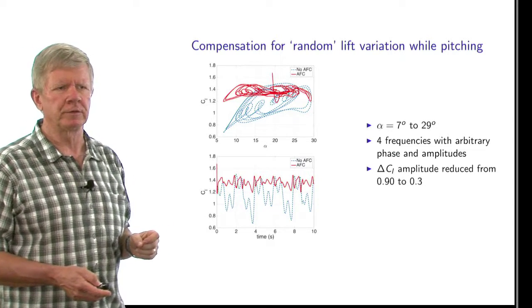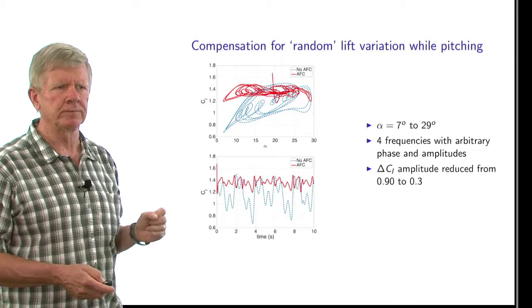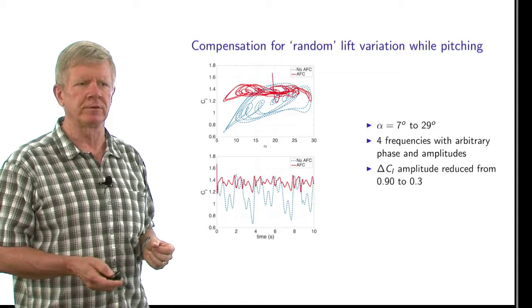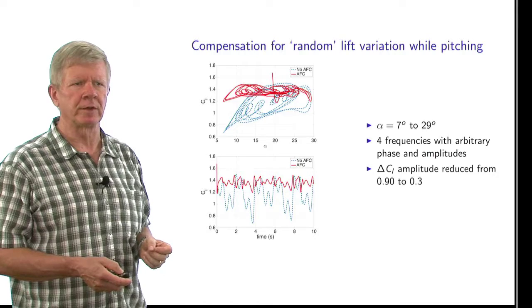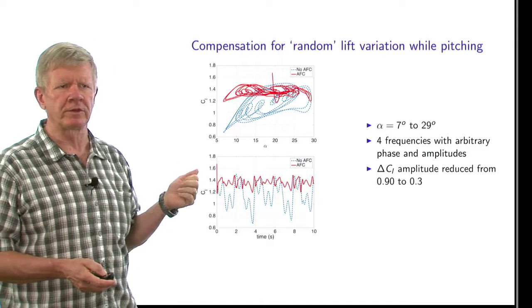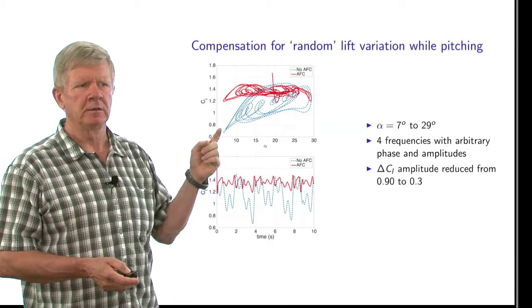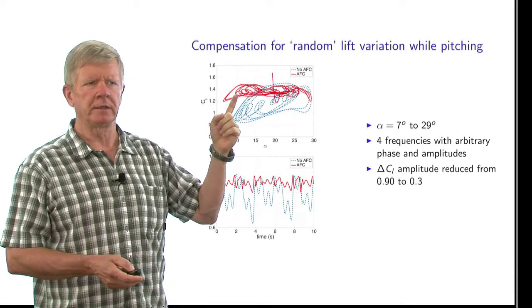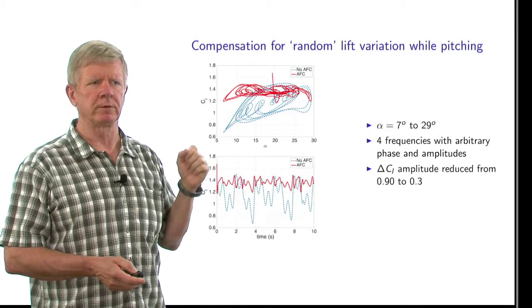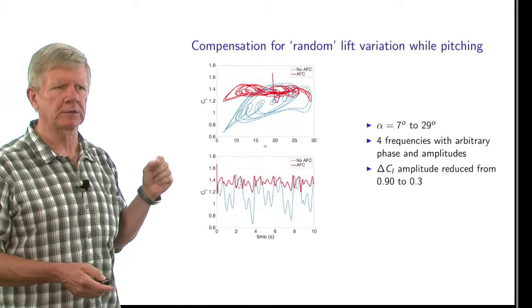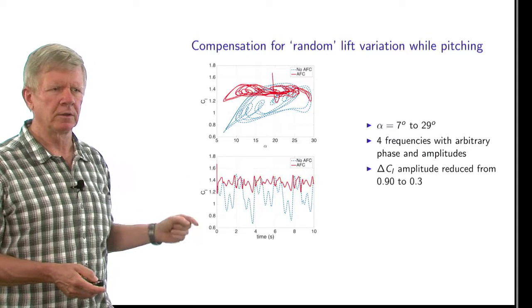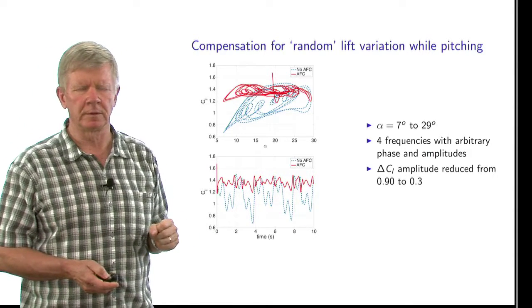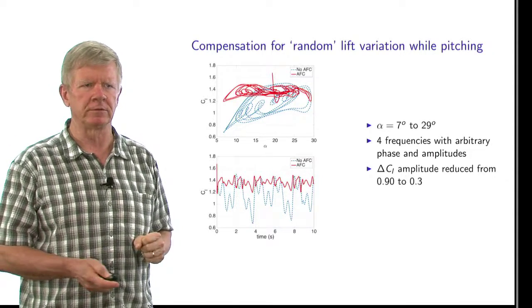To really test the model, we need to use a randomized input, not just a sinusoidal motion. And so we created a quasi-random signal with four different frequencies, with different amplitudes, different phases relative to each other. And now the wing is pitching between 7 degrees angle of attack and 29 degrees angle of attack. The blue line shows the behavior that we would expect to get without flow control. The red line shows the response we're expecting with flow control. And again, there's a factor of three reduction in the fluctuation amplitude. The lower plot shows the time variation signal. So again, it looks like the controller is doing a good job of suppressing these oscillations.